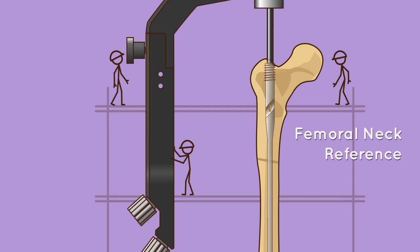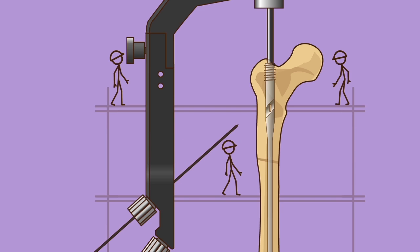Femoral neck reference: place a guide wire on the ventral side of the femoral neck under image intensification. The guide wire should be parallel to the lag attachment.